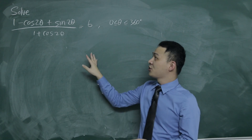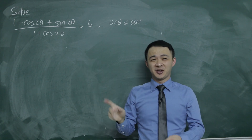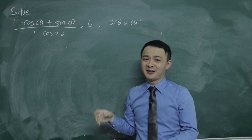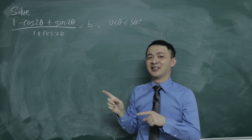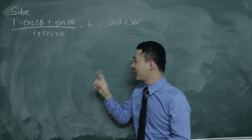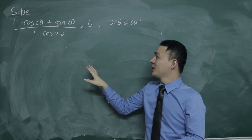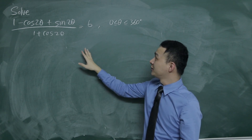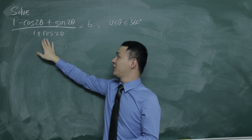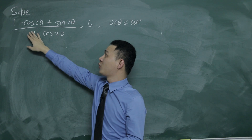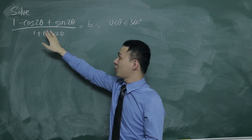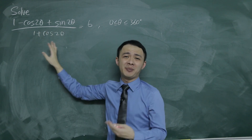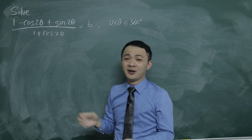Today I'm going to discuss this trigonometry function question with you. This is the solving part and I find this question is a little bit hard, so I decided to make a video to show you how to do this kind of question. You can see a lot of double angles here. The question is: (1 minus cos 2θ plus sin 2θ) over (1 plus cos 2θ).